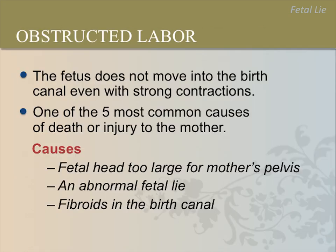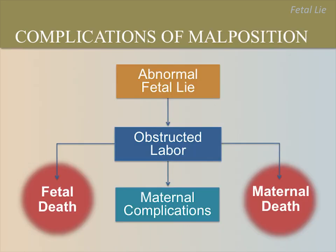Obstructed labor is a condition where the fetus does not move into the birth canal even with strong contractions. It is the fifth most frequent cause of maternal death. The most common cause of obstructed labor is a fetal head that is too large for the mother's pelvis. An abnormal fetal lie and benign tumors like fibroids in the birth canal are also causes. The risk of complications during birth is many times higher with a transverse lie or breech presentation than with a cephalic presentation.